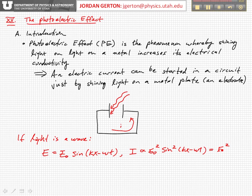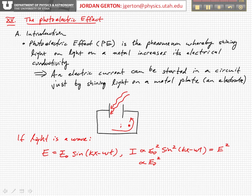Over time, if you average this kind of function, the sine squared basically just averages out to a particular value — a half or something — and so you get something which is again just proportional to the amplitude squared. So if this is the energy in a classical wave, then we would expect that if you increase the intensity, if you increase the amplitude of the electric field, it would carry more energy and basically result in more charges and a larger current.